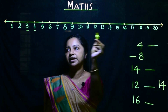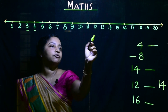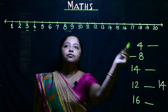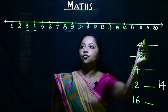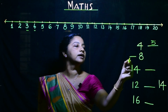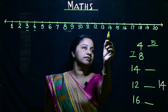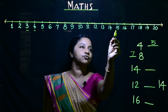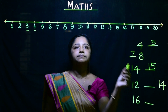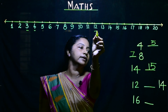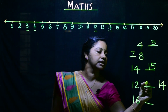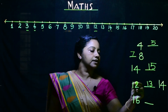Now look at number 4. What is the number after 4? 5. And what is the number before 8? 7. So, after 4 comes 5, and before 8 comes 7. Now look at number 14. What is the number after 14? 15. And look at numbers 12 and 14 — what is in between these numbers? 13. So, 13 is between 12 and 14.